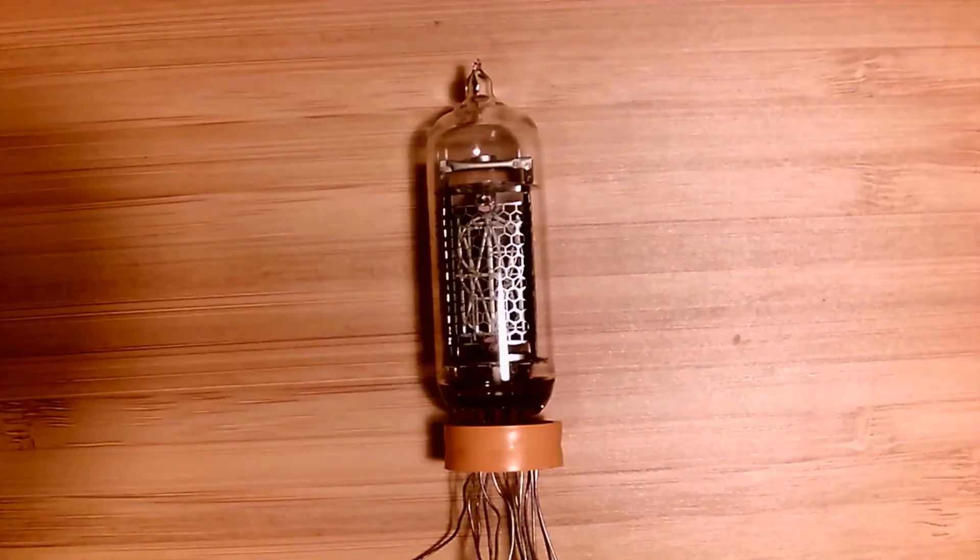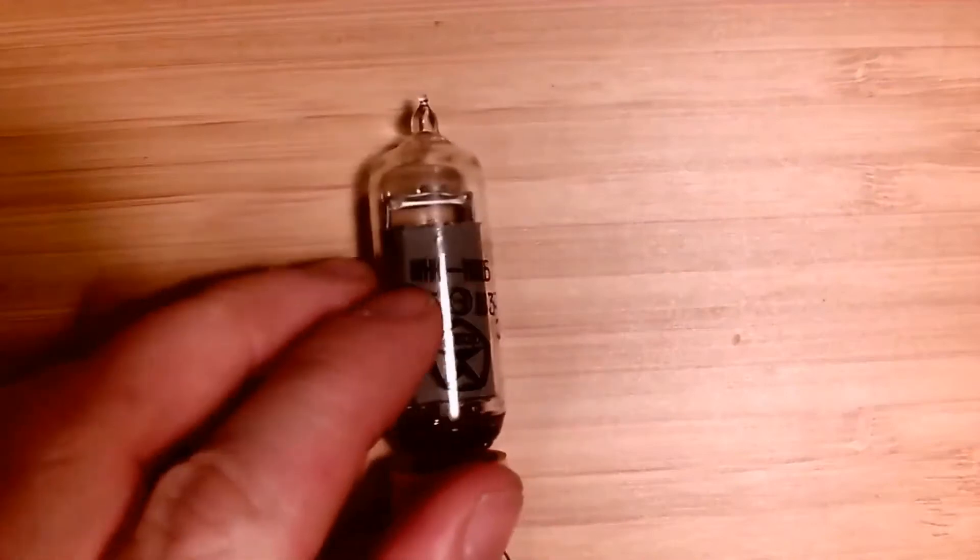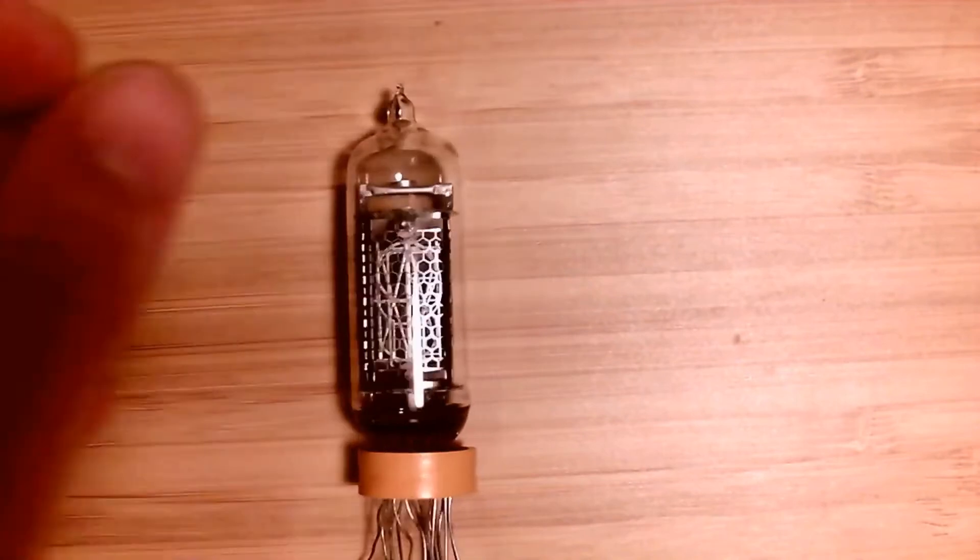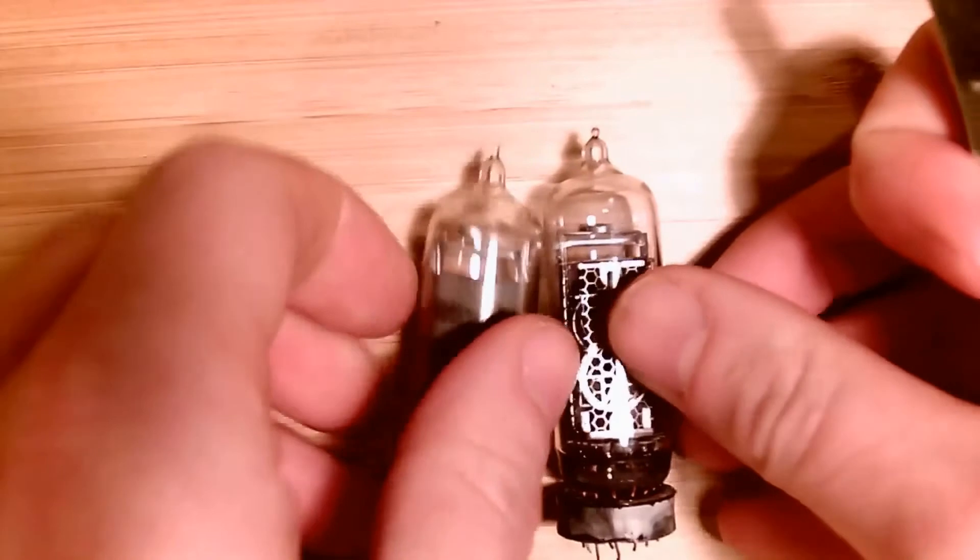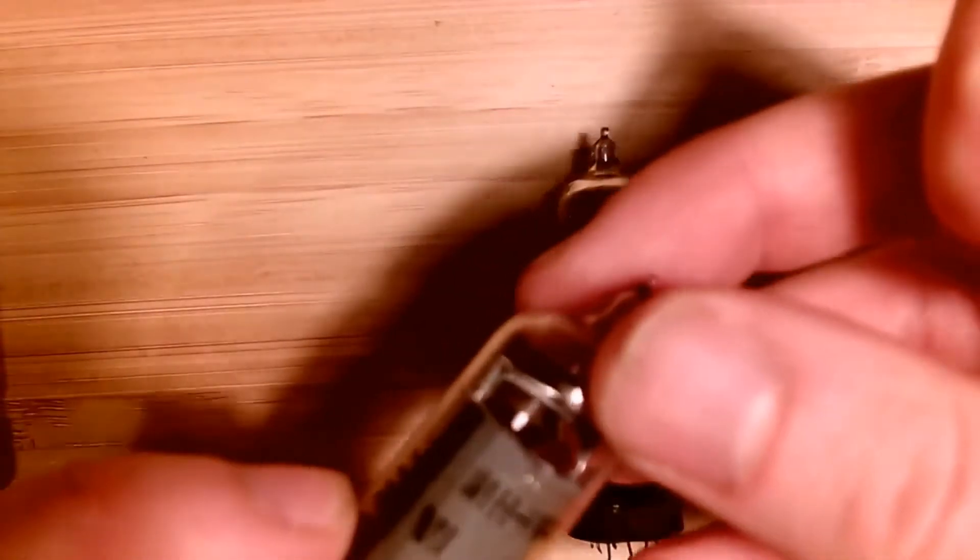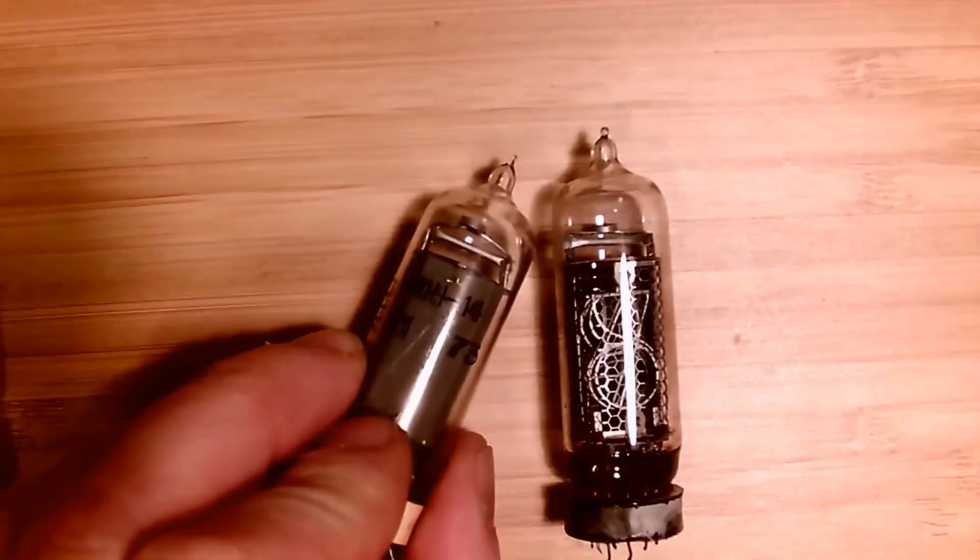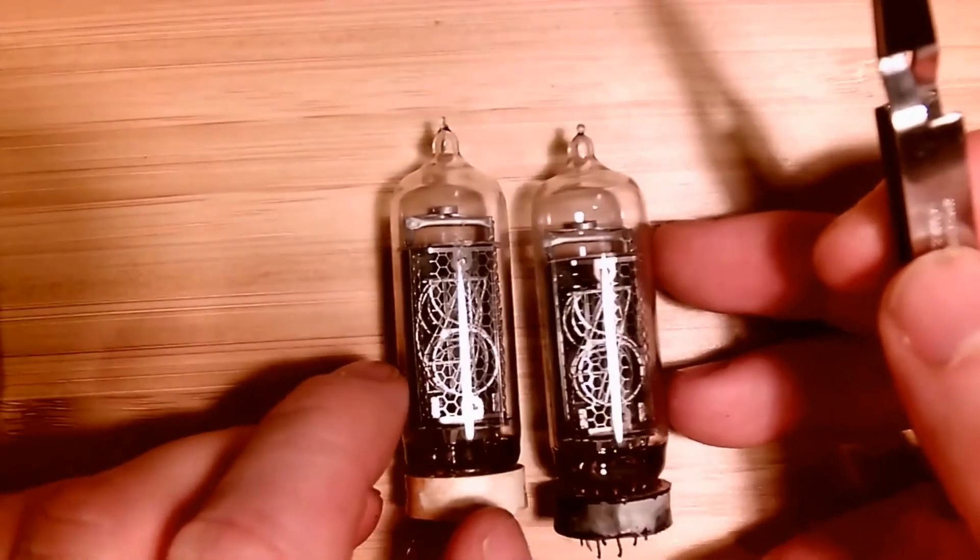With Nixie tubes being obsolete for about 50 years, you'd think they'd be quite hard to get hold of nowadays. Luckily there was one country that carried on manufacturing them up until the 1990s. Any guesses which country? Of course, Soviet Union. The tubes used in the clock are IN-14s. Mine are stamped, I think this one's stamped 1973. I think all the ones in the clock are manufactured in the 70s.